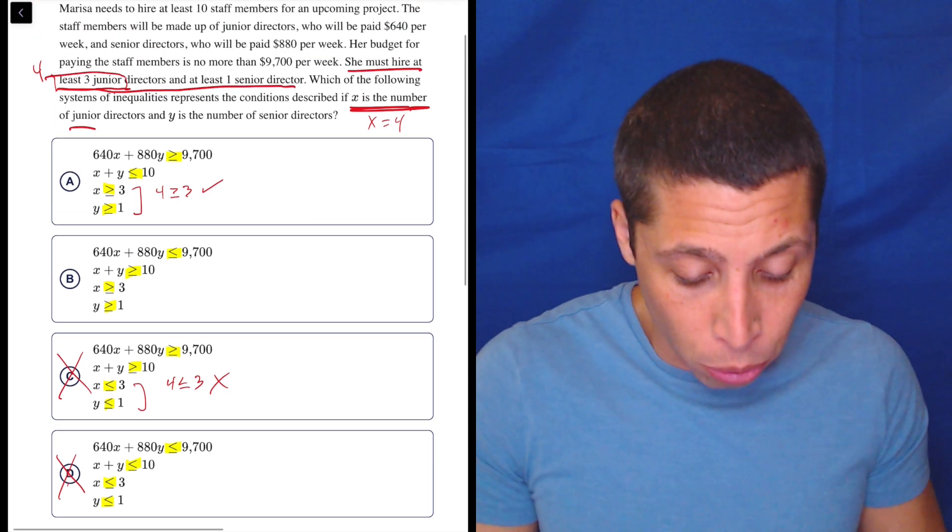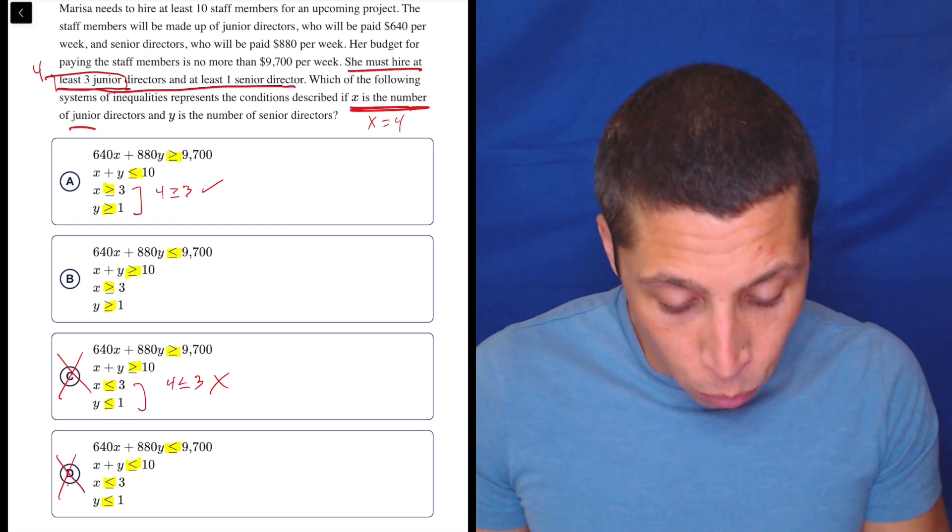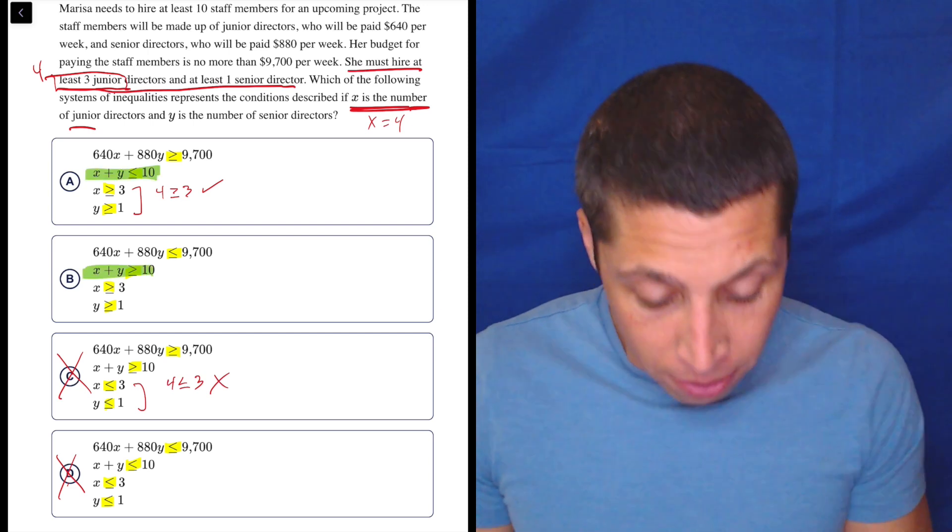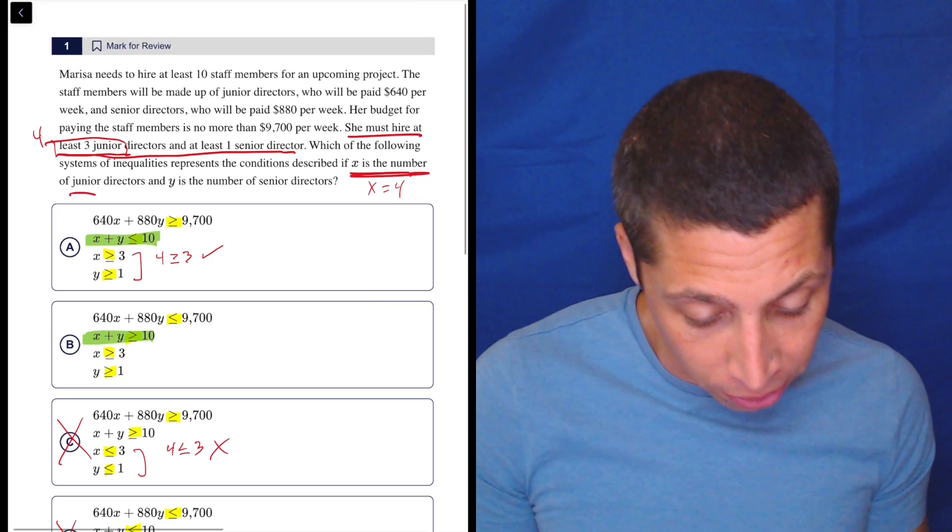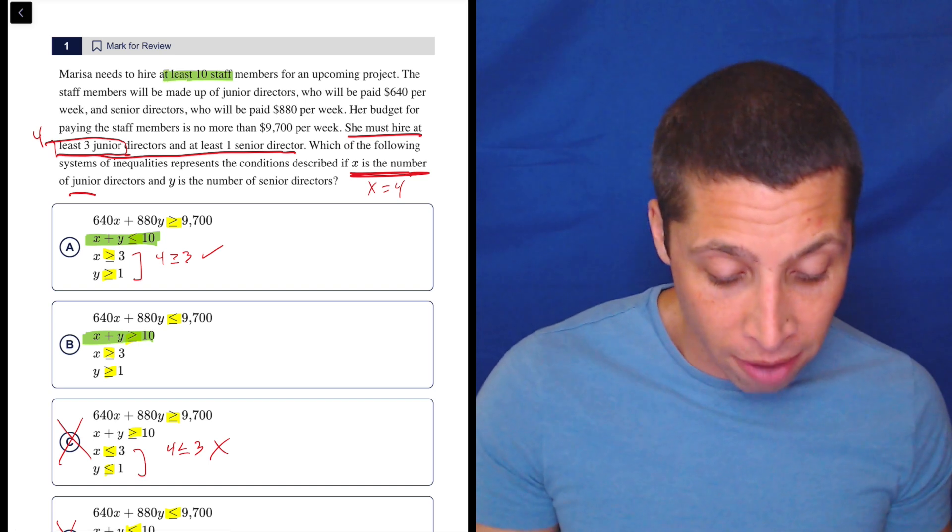And now I can go back into the story and say, what else is different? So let me change my color a little bit here. We can now focus on, I'm going to do this one. I'm going to focus on the 10. That seems easier. There's less going on. There's fewer numbers. So what is that 10? I saw 10 up here. She has to hire at least 10 staff members.